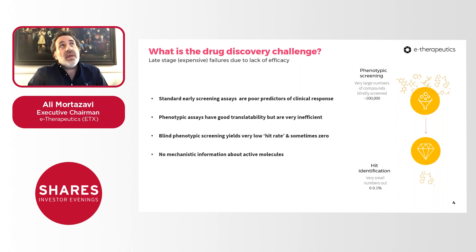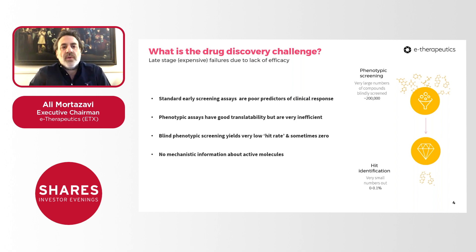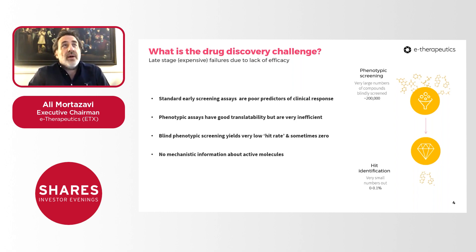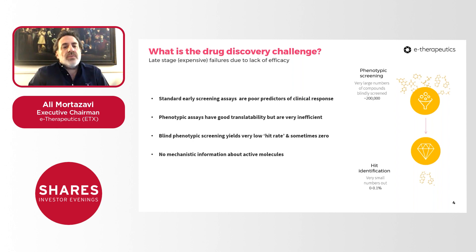A simple phenotypic assay in the context of COVID-19 would be to set up an assay where lung cell lines are induced with the COVID virus and you test antiviral compounds to see if you can reduce the viral load. In a blind phenotypic screening process, up to 200,000 or even more compounds can be tested. The number of hits — a hit being a compound with a meaningful impact on the phenotype — can range from zero to around 0.1%.